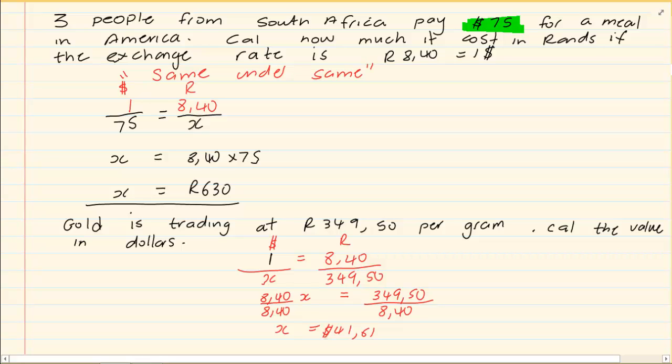So the method is the same. Same under same. You keep the dollars under one. You keep the rands under one. Then you are doing cross multiplication. Thank you for watching.